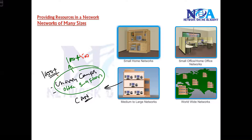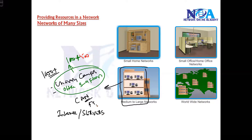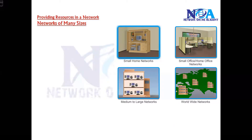In a medium to large network, it's more like a campus network where users request access to the internet and you also host servers — like an FTP server for file storage, database servers, email servers, and web servers for email and web traffic. We call these medium to large networks, and you may have multiple locations as well.